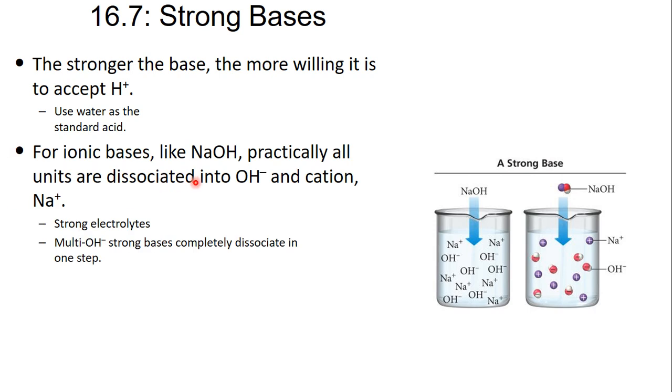For an ionic base, something like NaOH, ionic bond, all of the OH- and Na+ will dissociate with each other. You'll get a strong electrolyte solution. And all an electrolyte solution means is that you have ions in there.